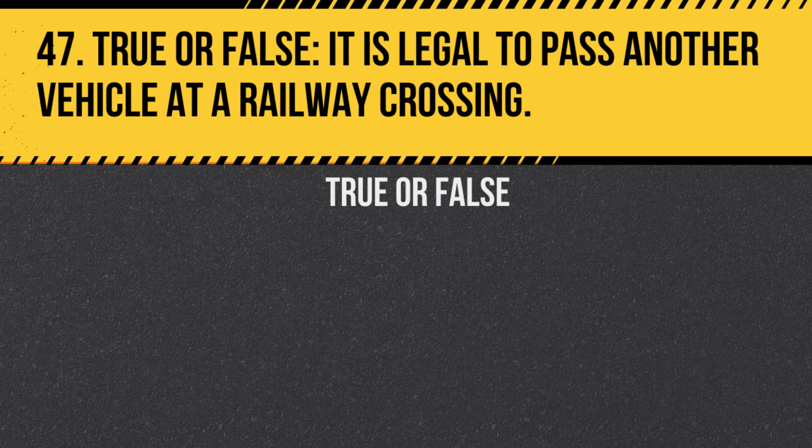Question 47. True or false: It is legal to pass another vehicle at a railway crossing?